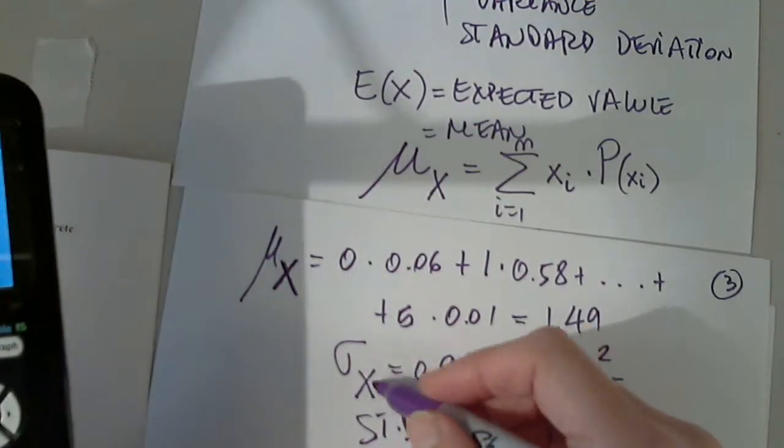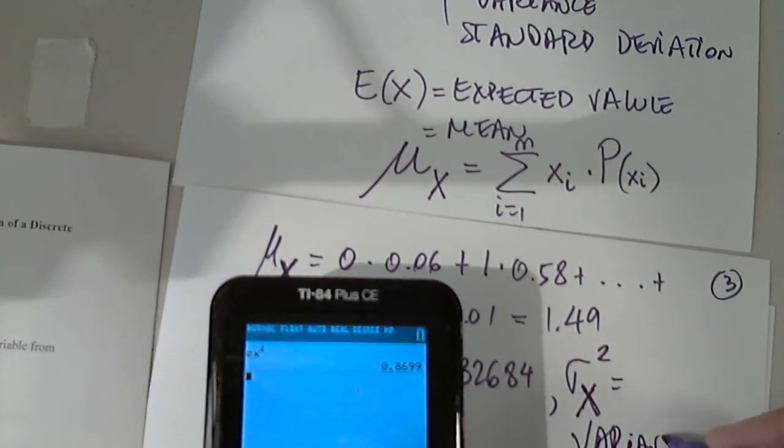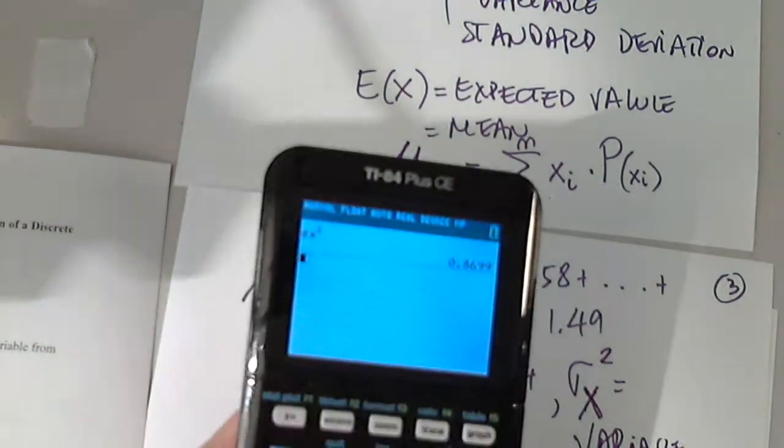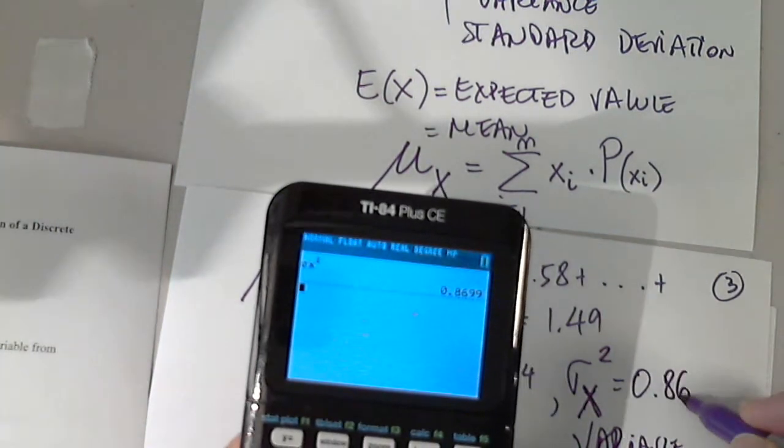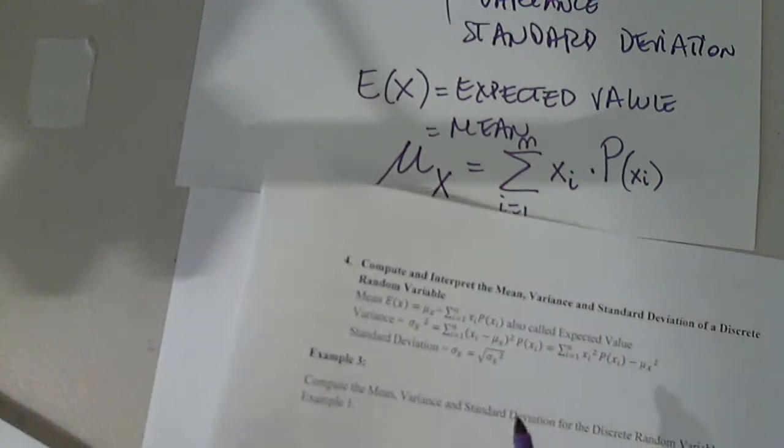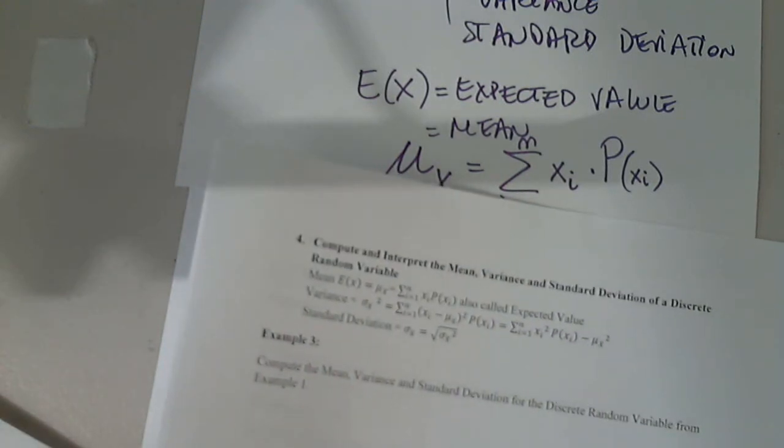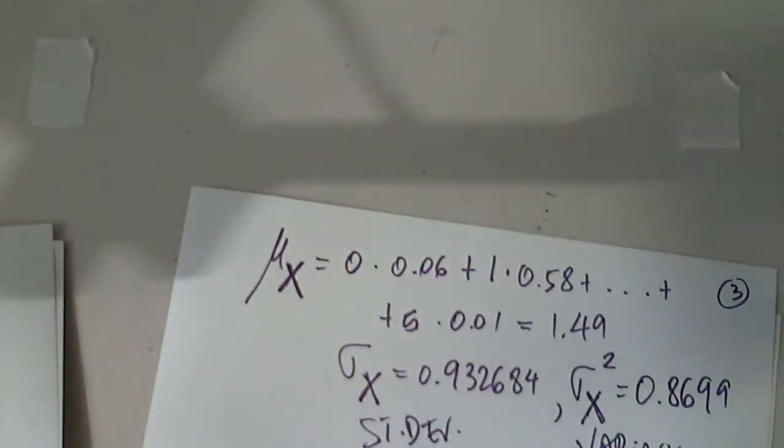So you can enter this and square it. That's fine. It's acceptable. But it's easier if you don't have this feature, that's fine too. So this is the standard deviation. And this is uppercase X, of course, uppercase X. And this is the variance of this random variable. Discrete random variable. 0.8699. So that was our example three. To compute the mean, the variance, and the standard deviation for the discrete random variable from example one.